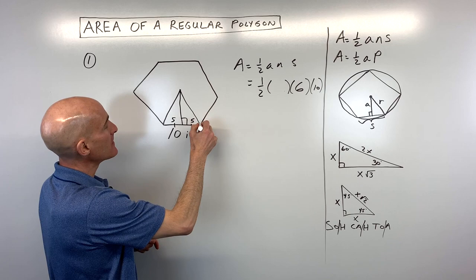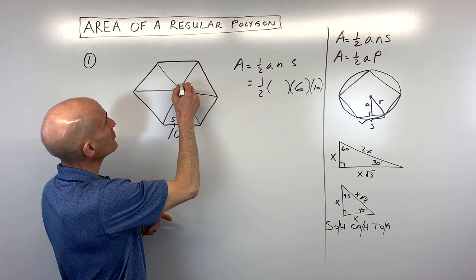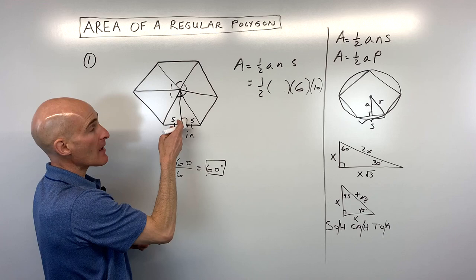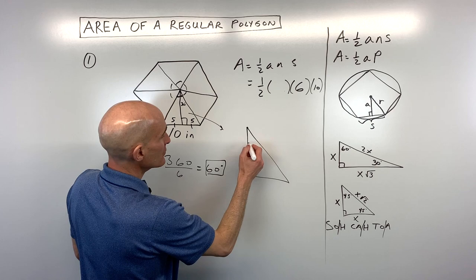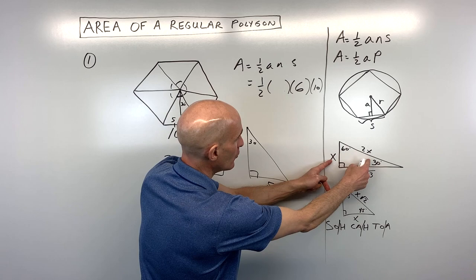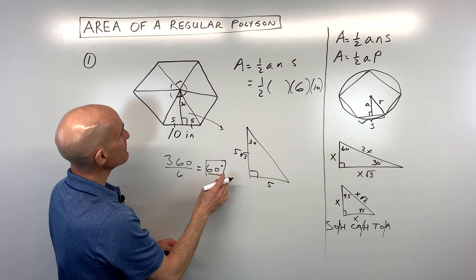There are six triangles, so the central angle is 360 divided by 6, which is 60 degrees. When we drop the apothem, it bisects this angle, giving us a 30-degree angle. Using 30-60-90 special right triangles: the short leg across from the 30-degree angle is 5, and to get the longer leg, we multiply by square root of 3. So the apothem is 5 square root of 3.